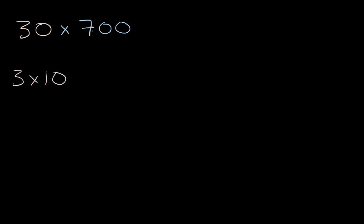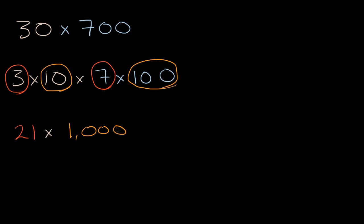So we can do it like we did before. 30 is 3 times 10, times 700, which is 7 times 100. And so if you say 3 times 7 is going to be 21 times 10 times 100 is going to be 1,000. So what's 21 times 1,000? Well that's going to be 21,000. Now just like we saw before, once you get a hang of it, and I always want you to understand where it's coming from, 3 times 7 is the 21, and then you're going to multiply that times 10 and then 100. So you have one, two, three zeros.